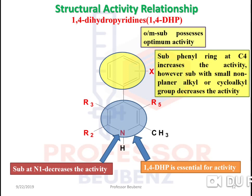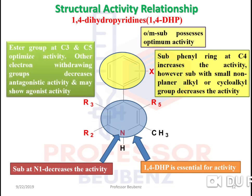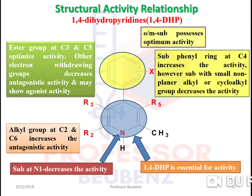If you substitute the phenyl ring at C4 with ortho or meta substitution, it will possess optimum or highest activity. That is why all calcium channel blockers maximally contain ortho or meta substitution at the phenyl ring at C4 position. At C3 and C5 positions, placing an ester group optimizes activity. Other electron-withdrawing groups decrease antagonistic activity and may show agonistic activity.